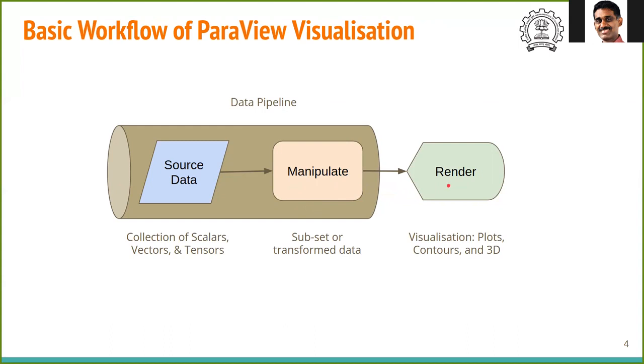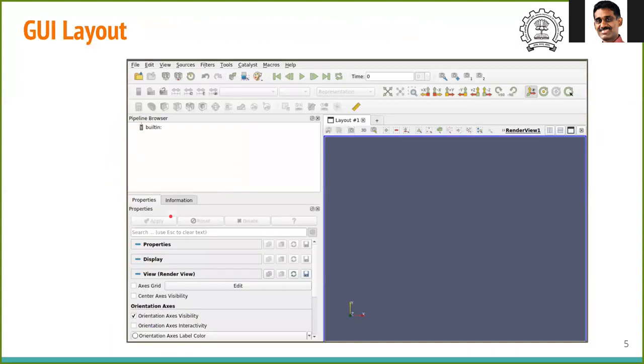The basic layout of the graphic user interface looks like this. The first line is the familiar menu items. It contains all the functionalities of ParaView and display control.